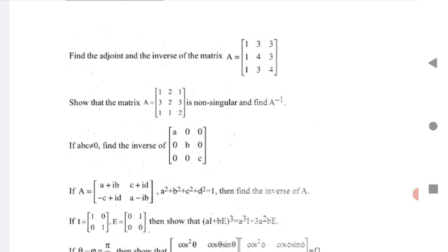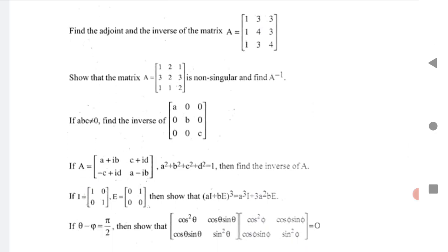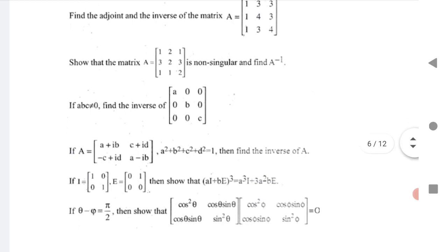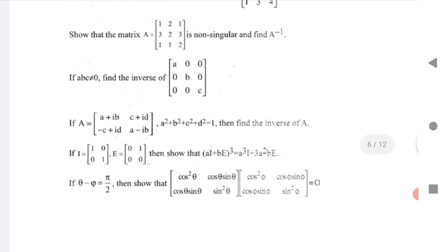Next question is show that A is non-singular and find A inverse. Then ABC is not equals to zero, find the inverse of the matrix. The third question is if A equals to, and A square plus B square plus C square equals to one.